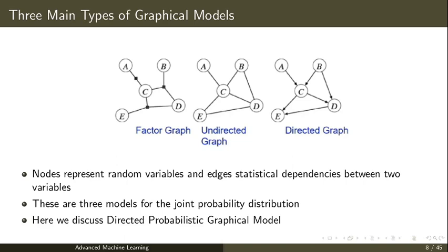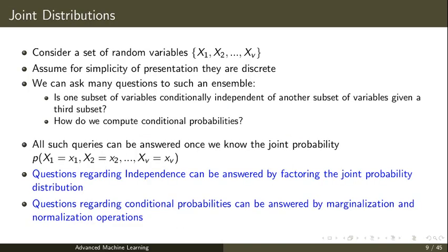So nodes in a graph represent random variables and edges represent dependencies. Edges represent dependencies between two random variables and actually we are interested in the lack of edges, which represents independent random variables.